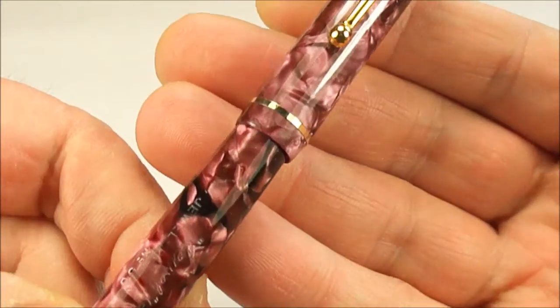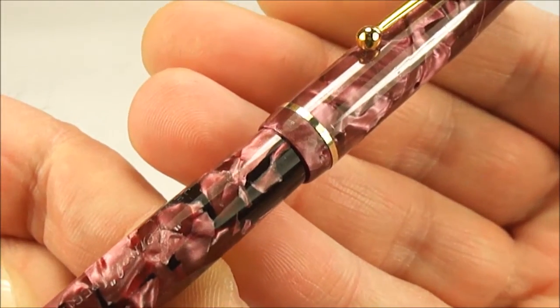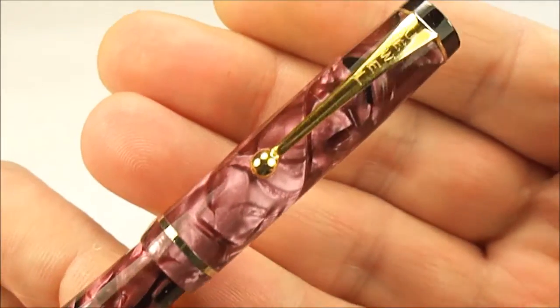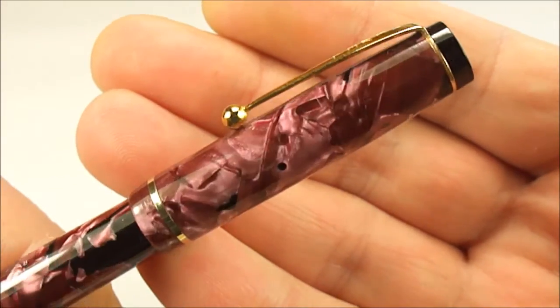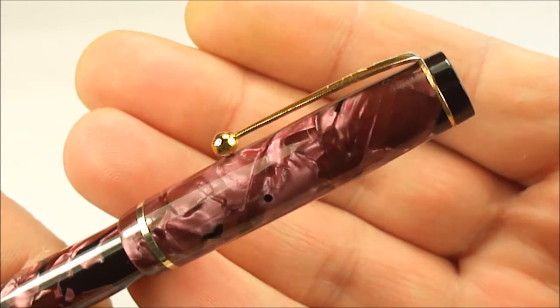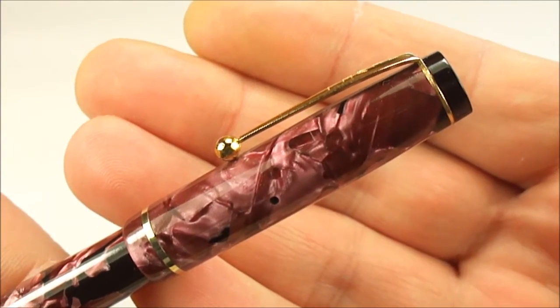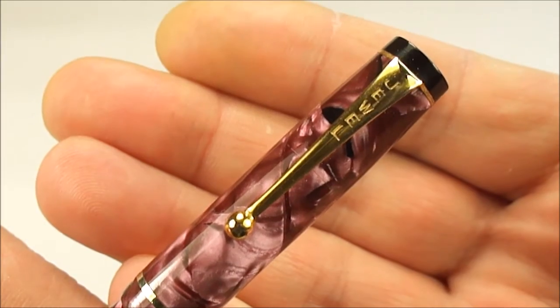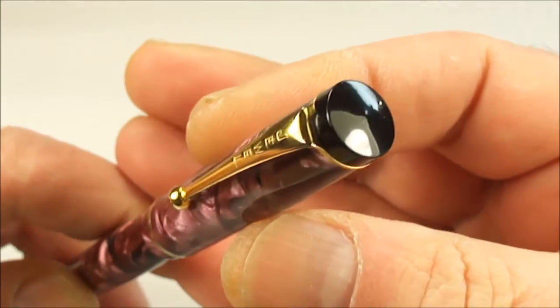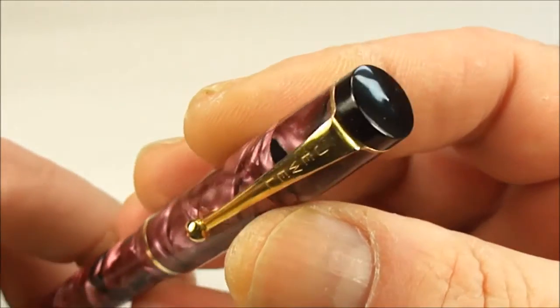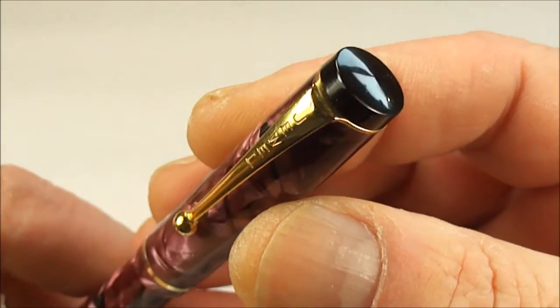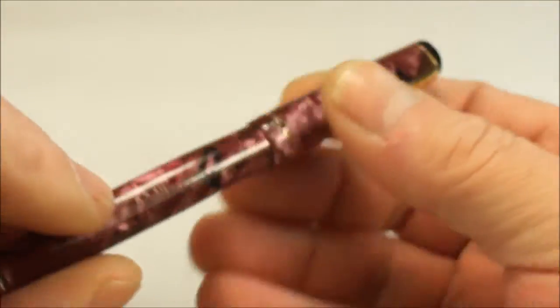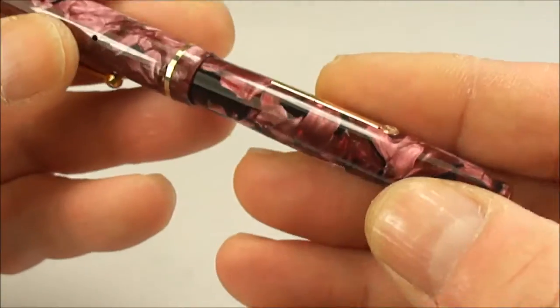It comes with gold-filled trim. You can see there's quite a thin cap band at the end of the cap. The clip is a very standard clip of that period - what they term as a ball clip. At the very top of the clip you'll see the word 'Jewel.' The cap top is flat - very slightly peaked.